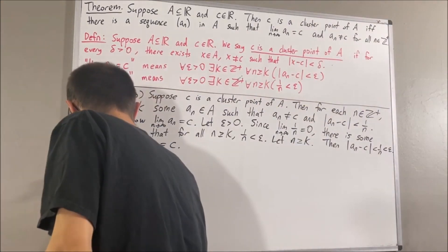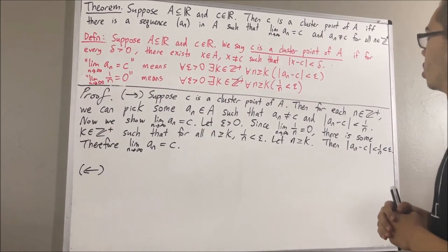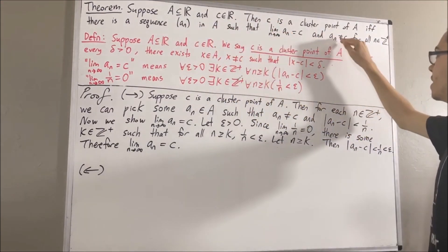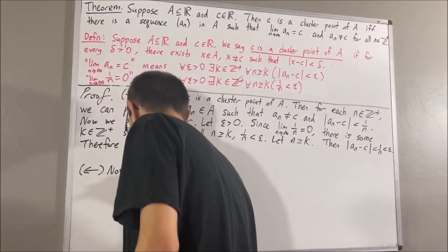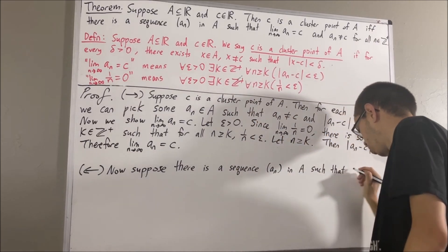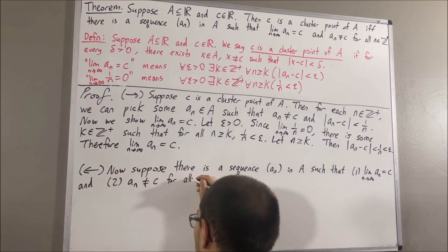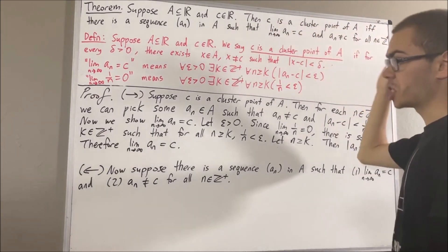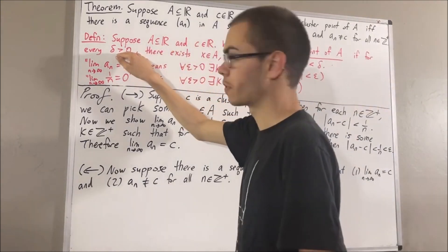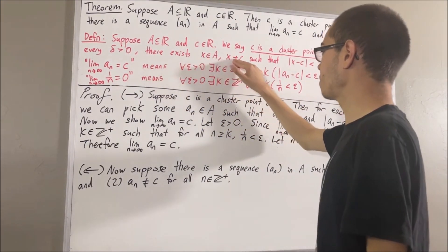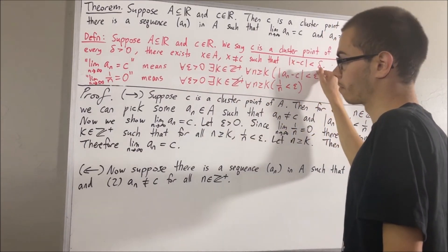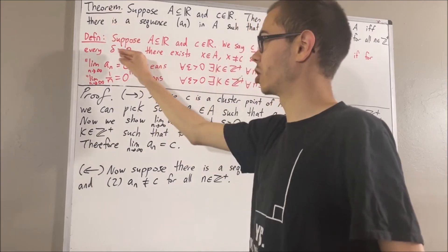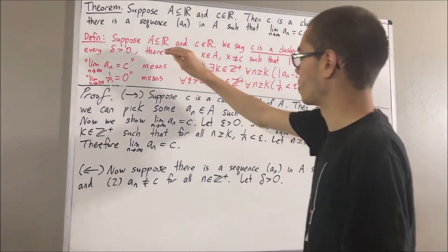Now let's prove the converse. In the proof of the converse, we are assuming that there is a sequence An in A such that the limit of that sequence is equal to C and An is not equal to C for all positive integers n. The goal from here is to show that C is a cluster point of A. By definition, this means we want to show that for every delta greater than 0, there exists an element x in A distinct from C such that the absolute value of x minus C is less than delta. Since we're proving a statement about every delta greater than 0, let's give ourselves an arbitrary delta greater than 0.